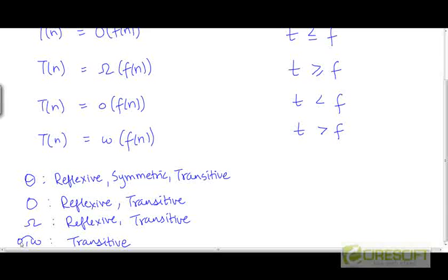Just as the little-o and little-ω notations indicate only a transitive relationship between the functions they relate, the strict less than and greater than relations between numbers satisfy only transitivity. If t < f and f < g, then t < g. Likewise, if t > f and f > g, then t > g. But they are not reflexive — t is not less than t, and t is not greater than t. And they are not symmetric either: if t < f, then f is not less than t; f is in fact greater than t. So neither of these two relations is symmetric.